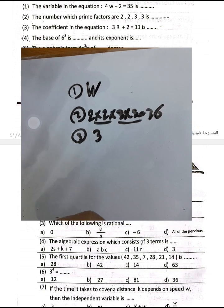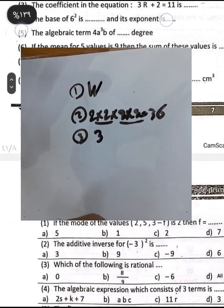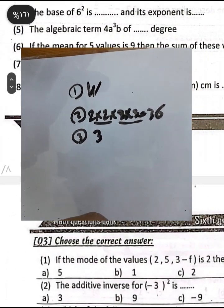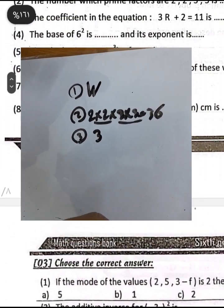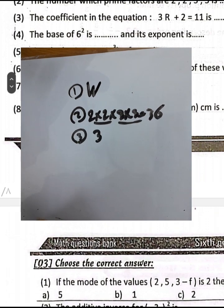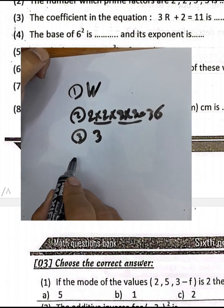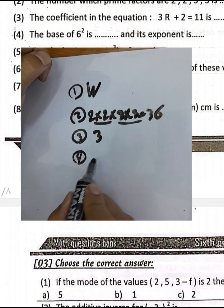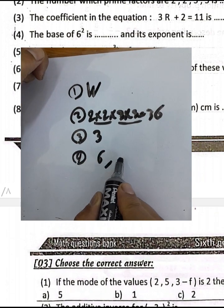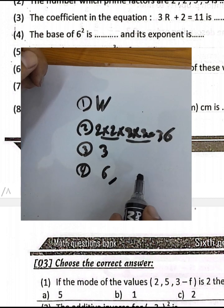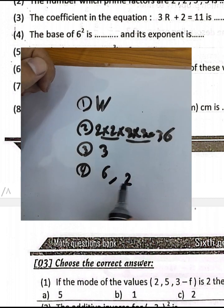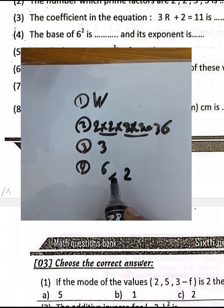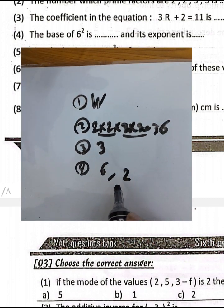Question number 4: in the expression 6 to the power of 2, the base is 6 and the exponent is 2. The base is 6 and the power or exponent is 2.